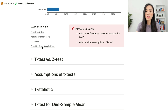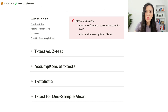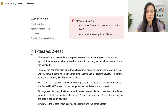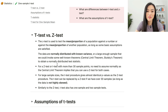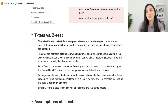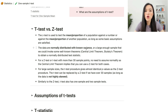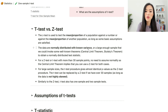Let's look at the difference between the t-test and the z-test. From the previous lesson, the z-test is used to test the mean or proportion of a population against a number or against the mean of another population, as long as some basic assumptions are satisfied. The data must be normally distributed with known variance, or we have a large enough sample to invoke the Central Limit Theorem.